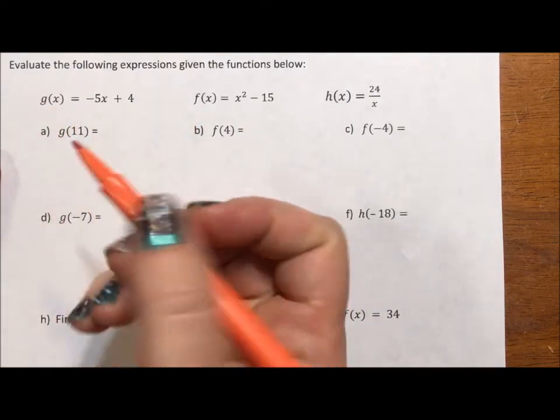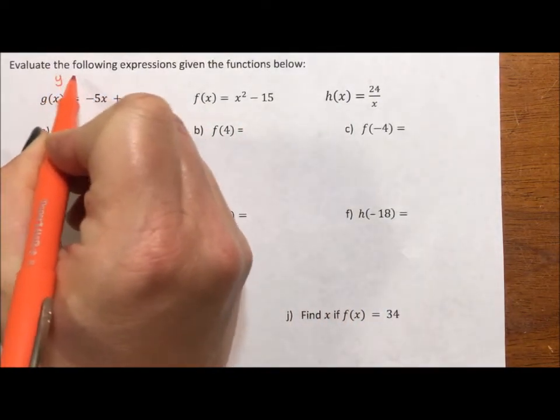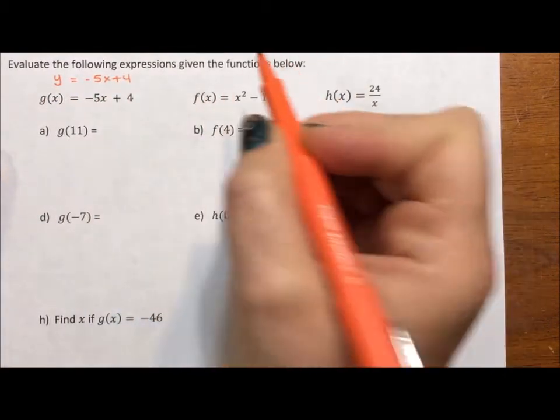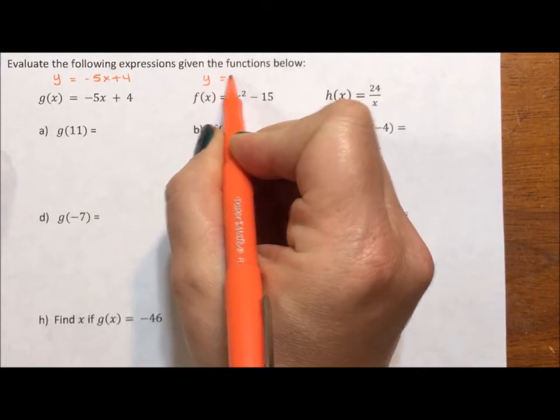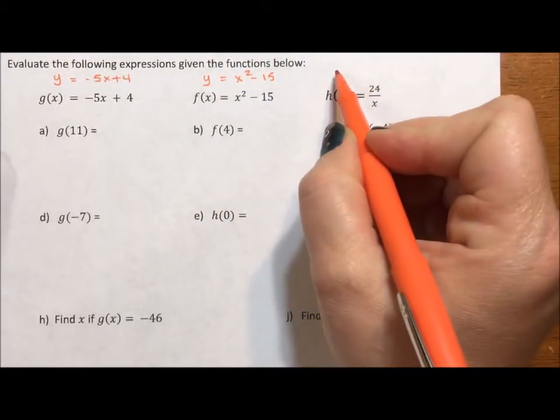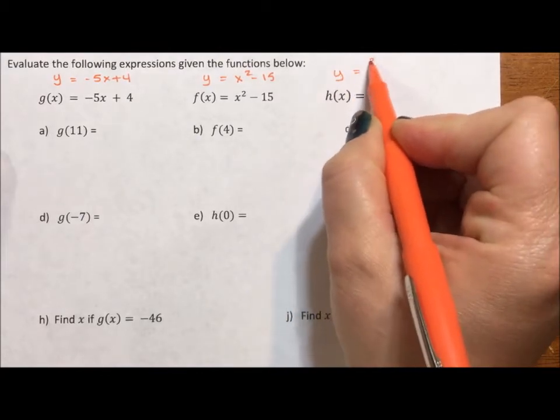This isn't g times x. g(x) is just another way of saying y equals -5x + 4. This isn't f times x. It's another way of saying y equals x² - 15. And this is not h times x. It's just another way of saying y equals 24 over x.